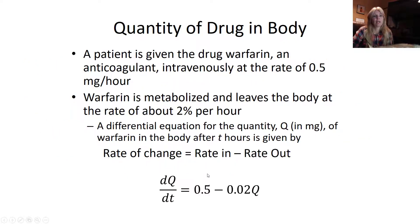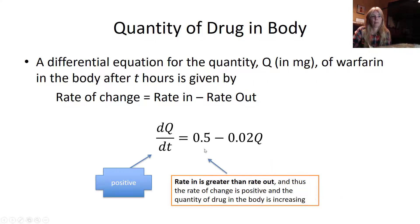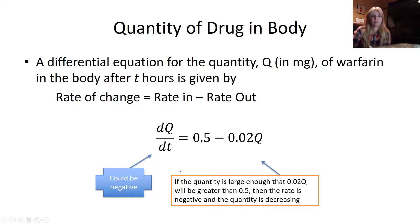So I have a rate in minus rate out. My rate in is 0.5 milligrams per hour, and then 2% of what was there. Of course, if the initial quantity is small, then the rate the drug is excreted is less than the rate it's entering the body. And if the rate in is greater than the rate out, then our rate of change would be positive.